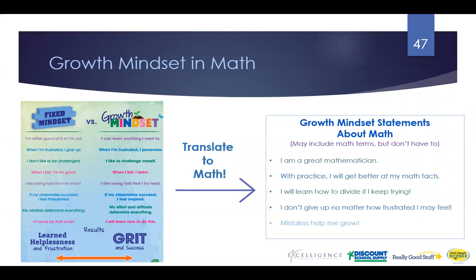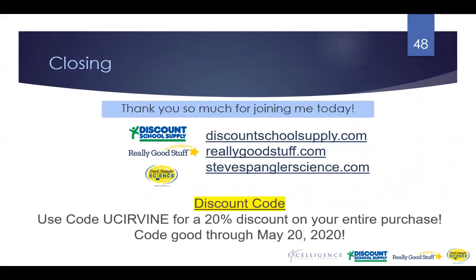Growth mindset statements for math might look like: 'I am a great mathematician,' 'With practice, I will get better at my math facts,' and 'I will learn how to divide if I keep trying.' Even if they don't feel it, getting them to say these things will help them start to believe it. Social-emotional learning is so important — your children should be doing it at school, at home, as much as they can. They'll be more likely to self-regulate and become better people overall.